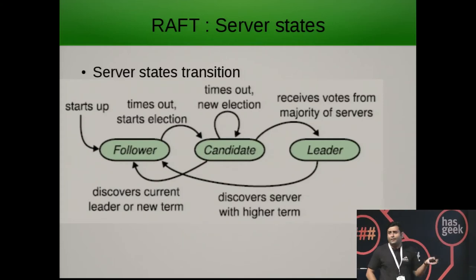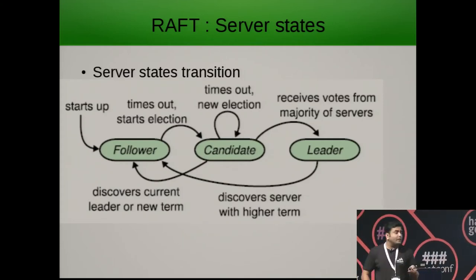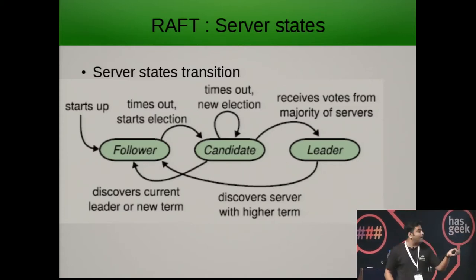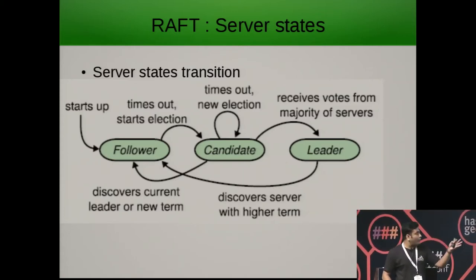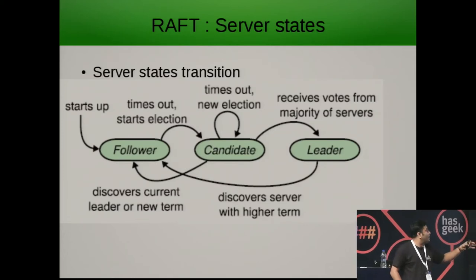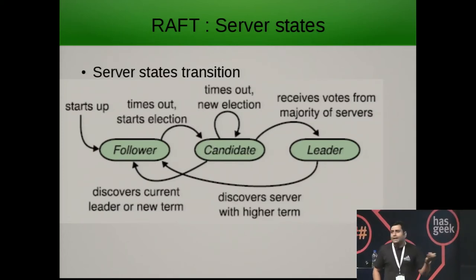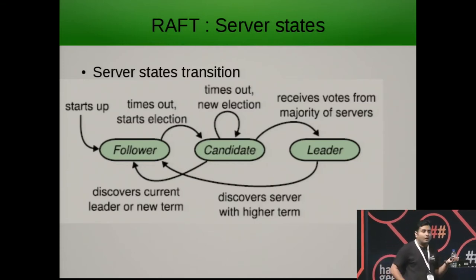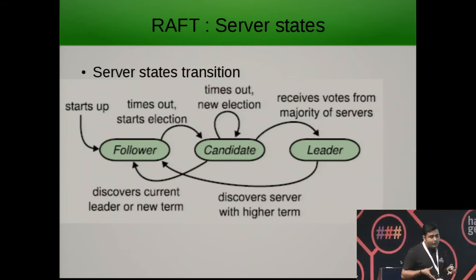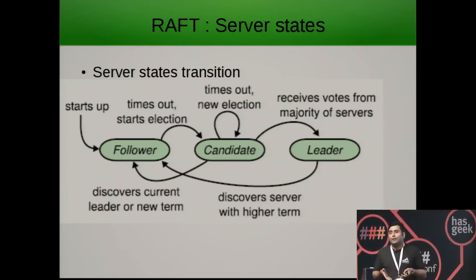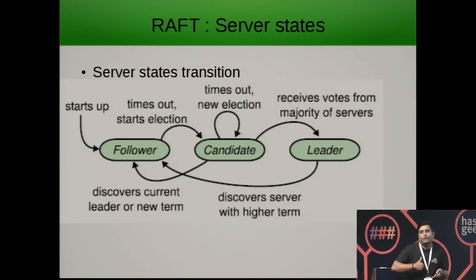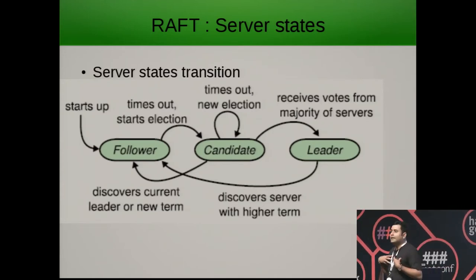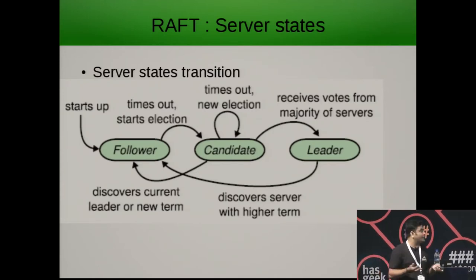These are the server states Raft maintains: follower, candidate, and leader. The candidate is an interim state where, when a follower sees there is no leader available, it moves to the candidate state so it can vote for itself and participate in the leader election.